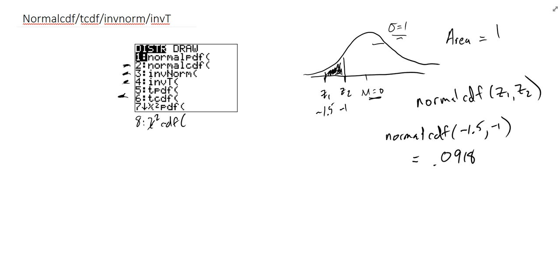This relates to a candy bowl analogy: if 25% of candies in a bowl are blue, then there's a 25% chance of randomly pulling out a blue one. Similarly, if 9% of values are between negative 1.5 and negative 1, then if you choose something at random, there's a 9% probability of landing in that section.